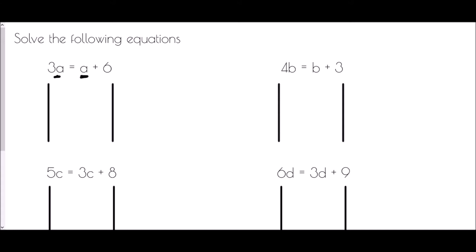In 3a equals a plus 6, the smallest amount of a is the single a. So the first thing I'm going to do is subtract a from both sides of the equation. 3a take away a gives me 2a, and on the right hand side a take away a leaves just the plus 6. Now this is an equation with just a single unknown: 2a equals 6. I need to get a on its own, so I divide by 2 on both sides — 2a divided by 2 is a, and 6 divided by 2 is 3.